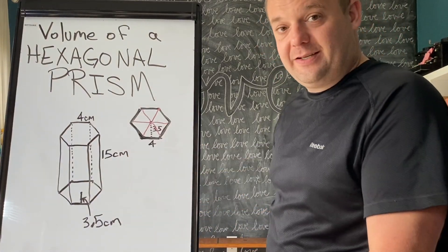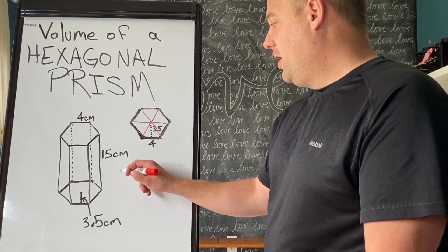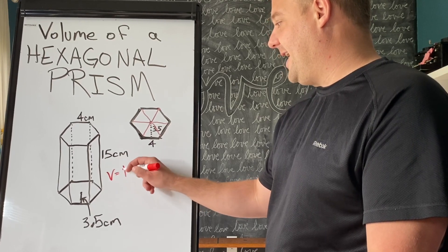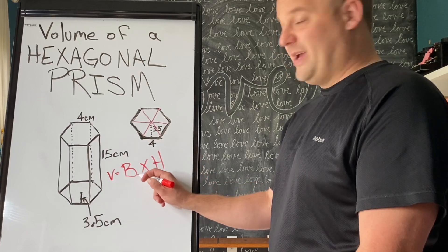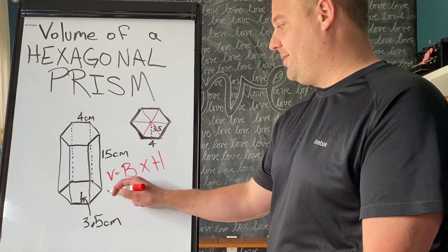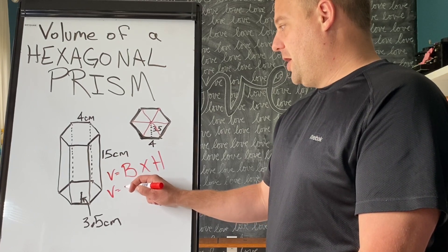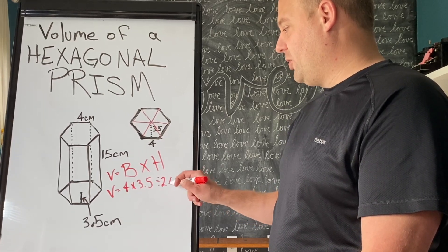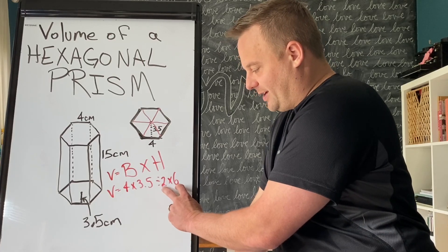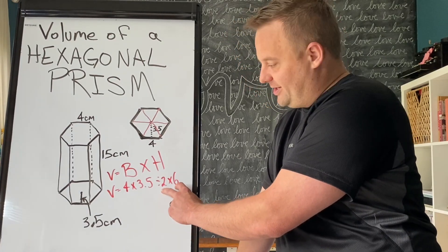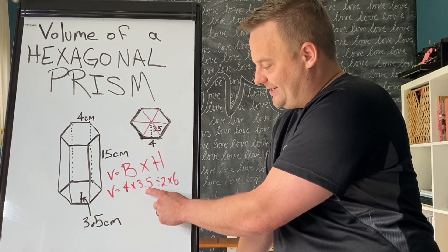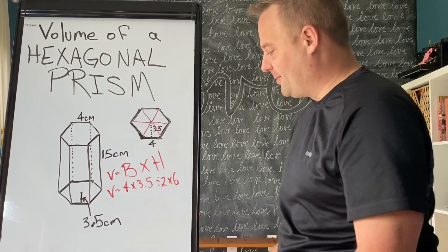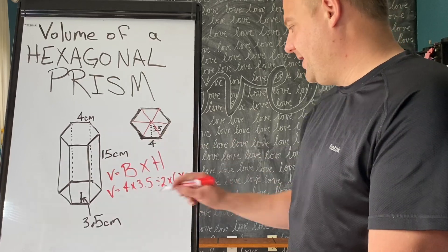Now we have the area of the base: 42 centimeters squared. Then we multiply it by the height and we have our answer. This big B means area of the base. To find it, I did 4 times 3.5 divided by 2 then multiplied by 6. When you get really good, you'll see that dividing by 2 and multiplying by 6 is the same as multiplying by 3. So I go 4 times 3.5 times 3, then multiply by the height of 15.